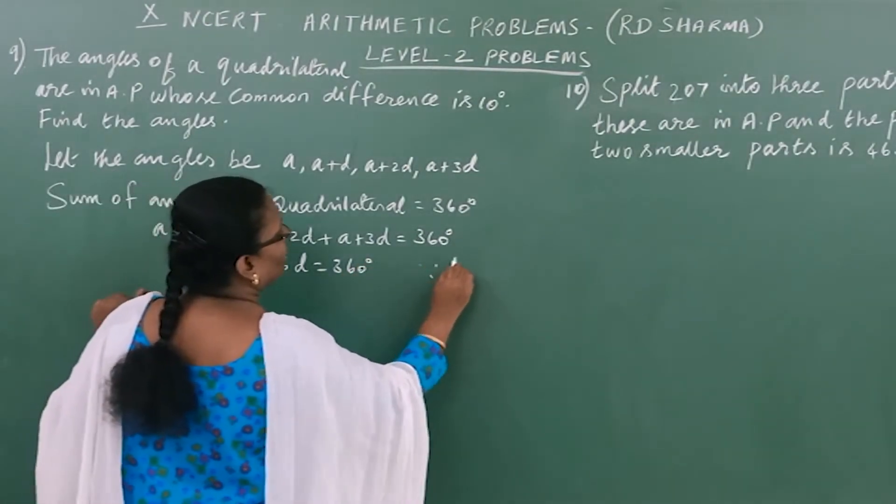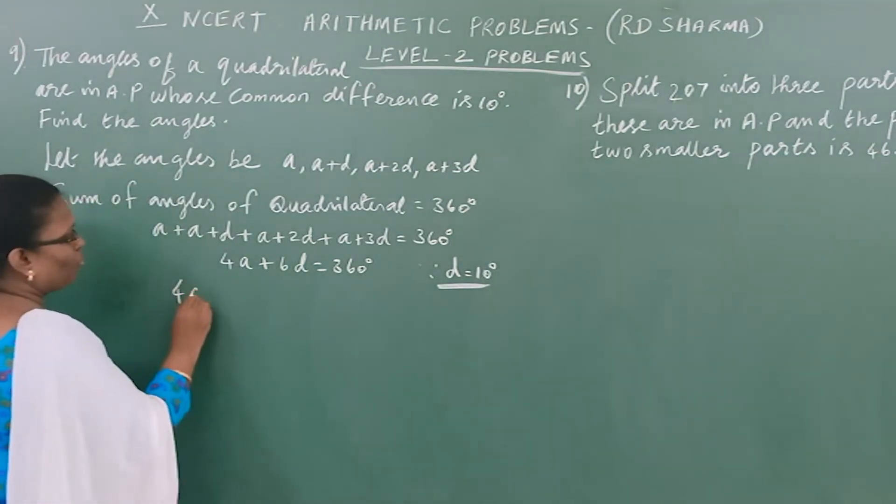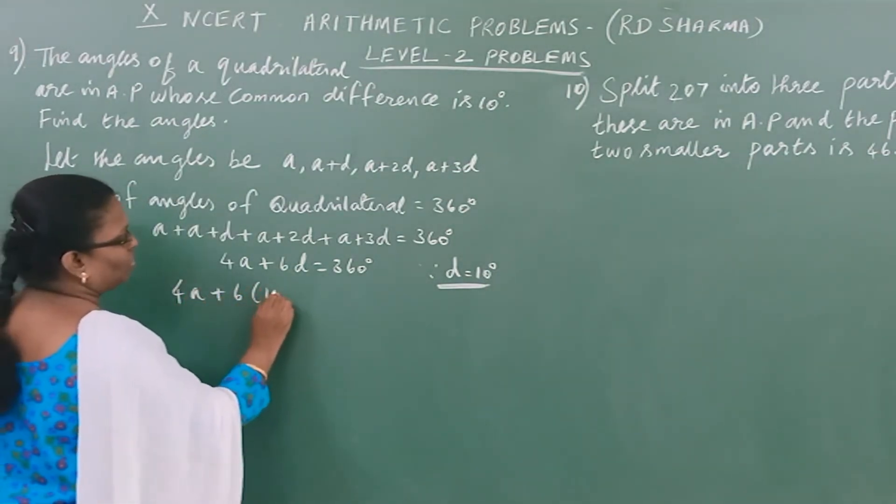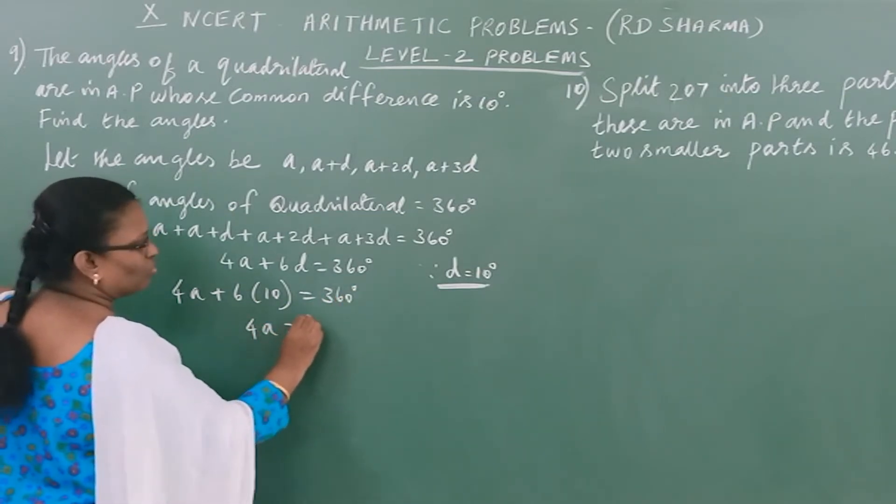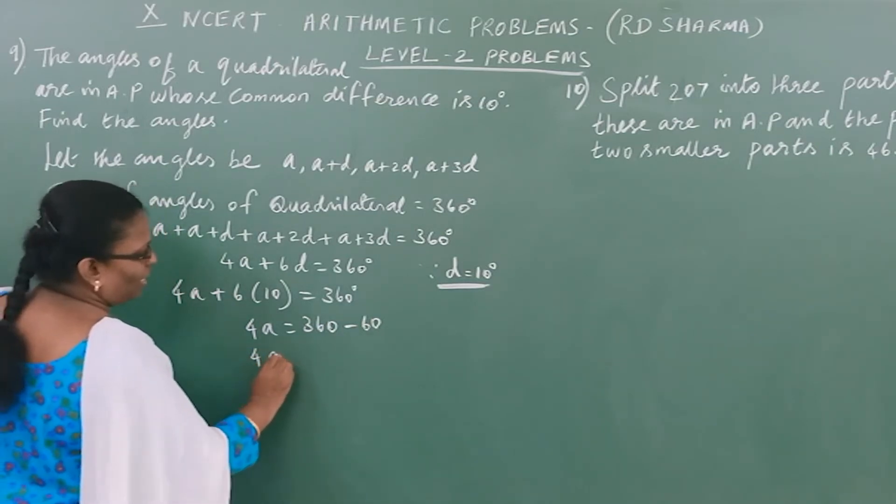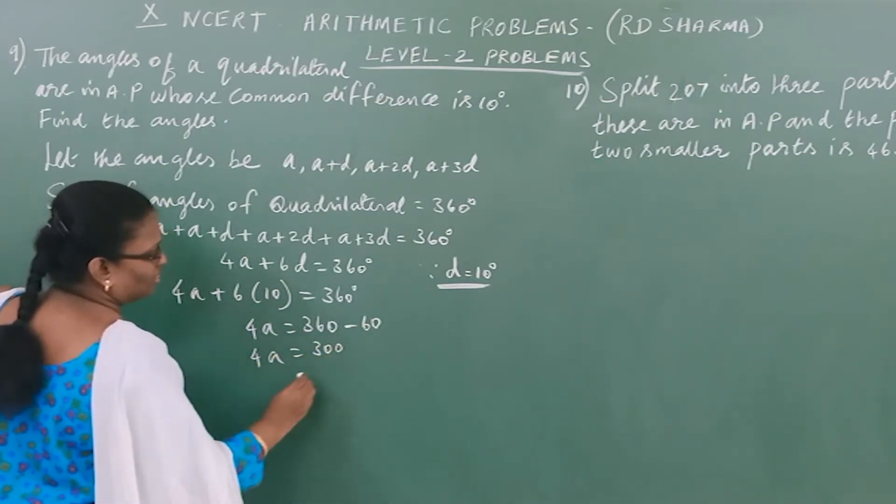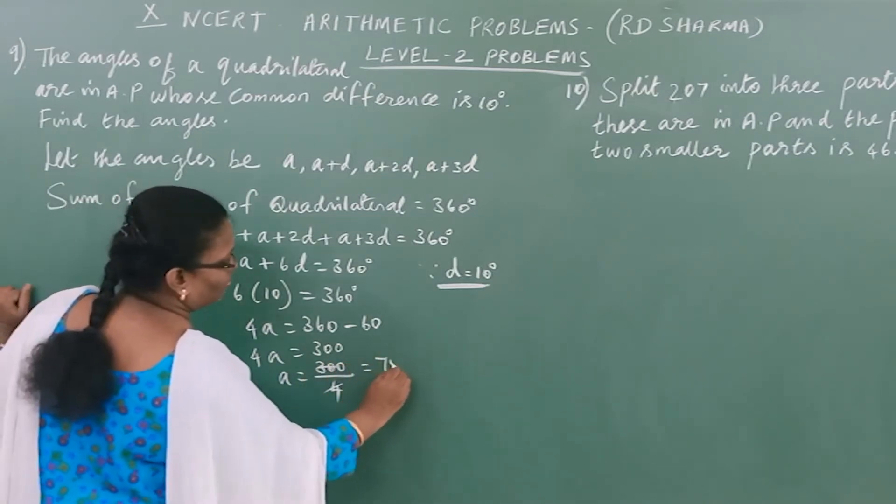Since D equals 10, the common difference, we have 4A + 6×10 = 360°. So 4A = 360 - 60 = 300. Therefore A = 300÷4 = 75.